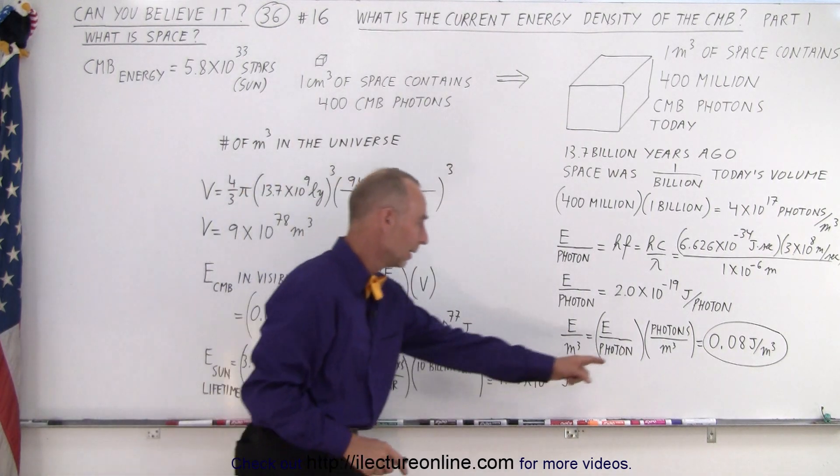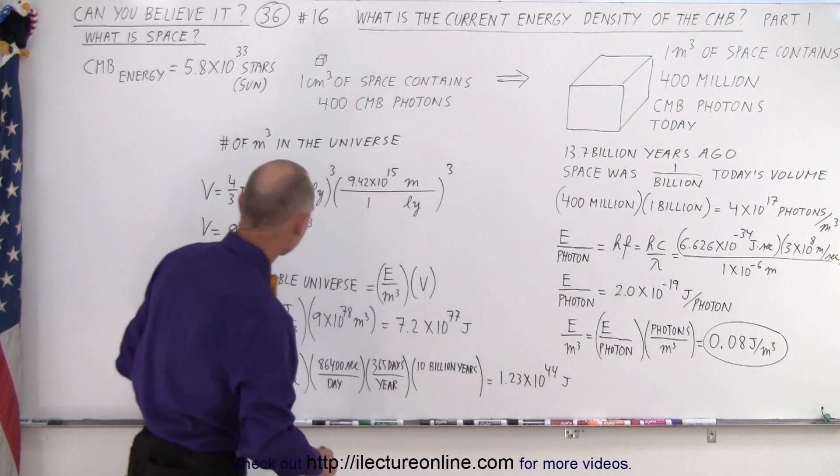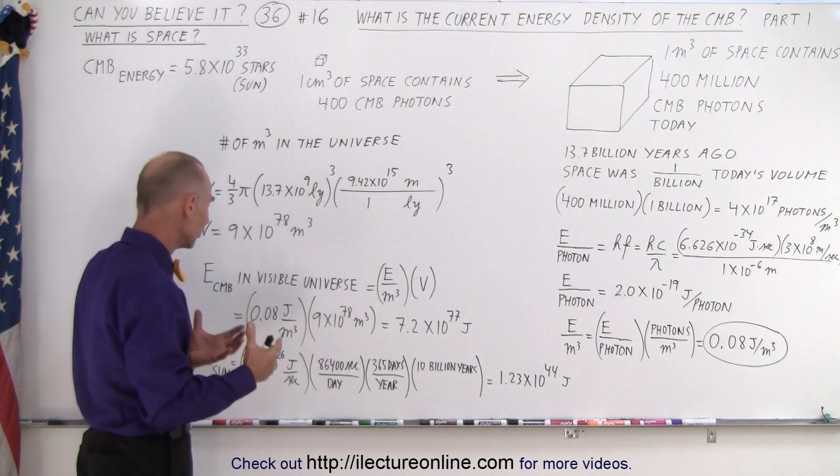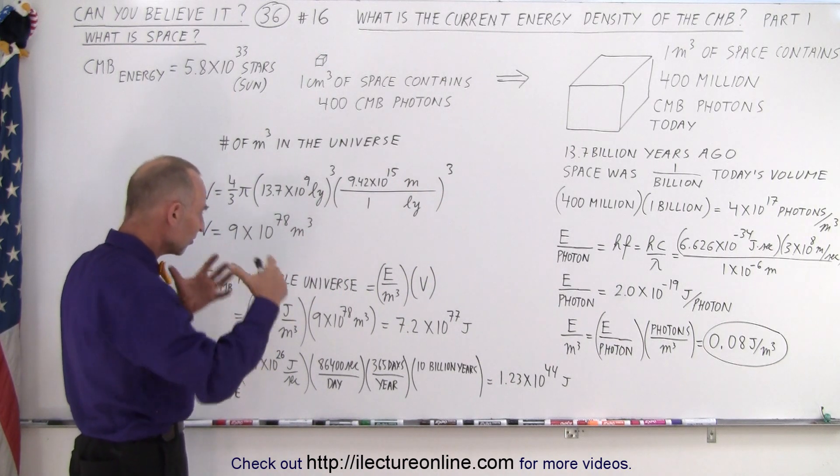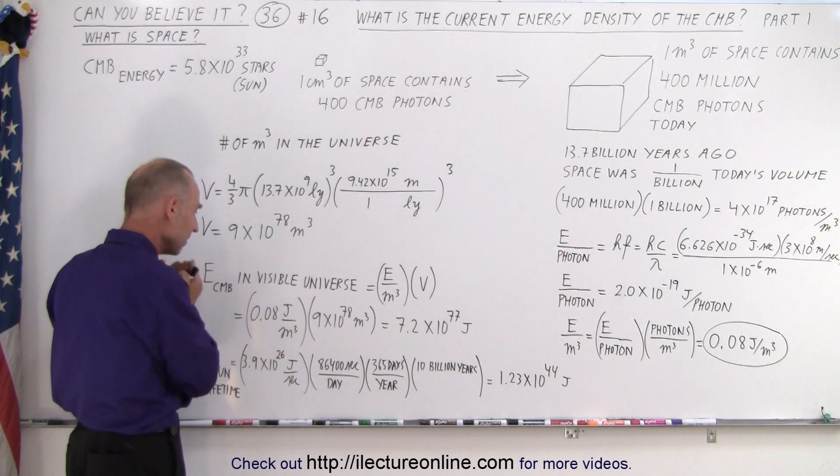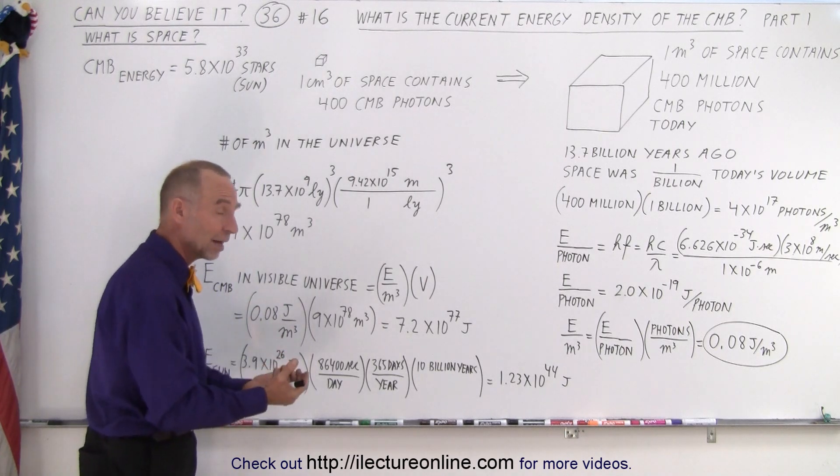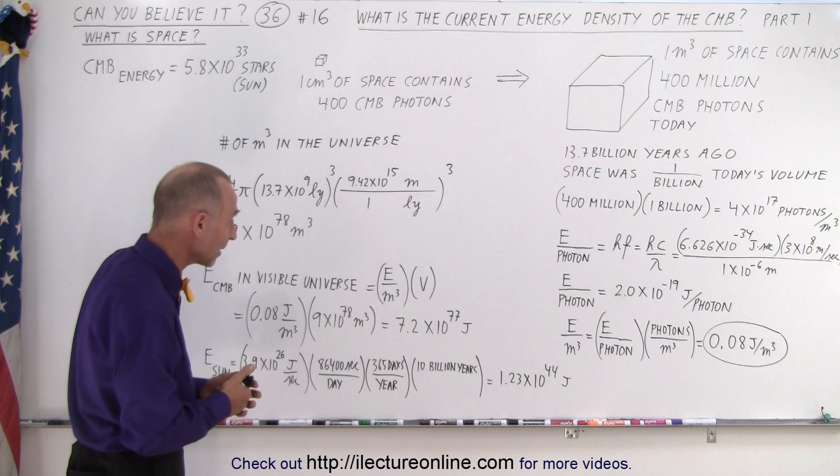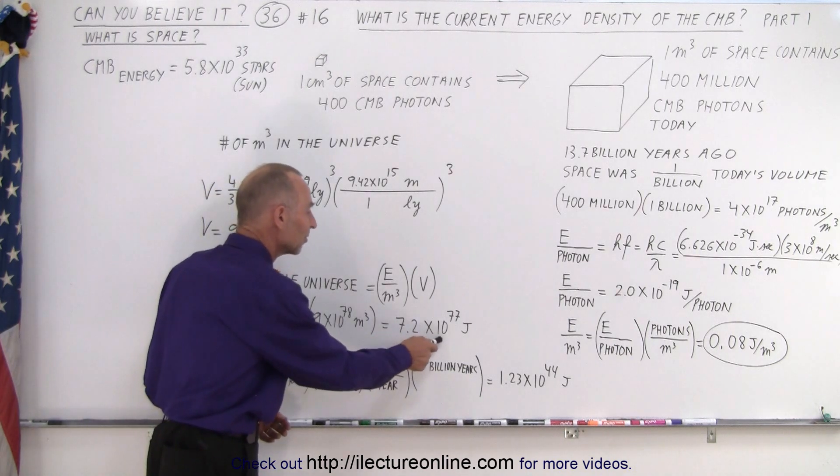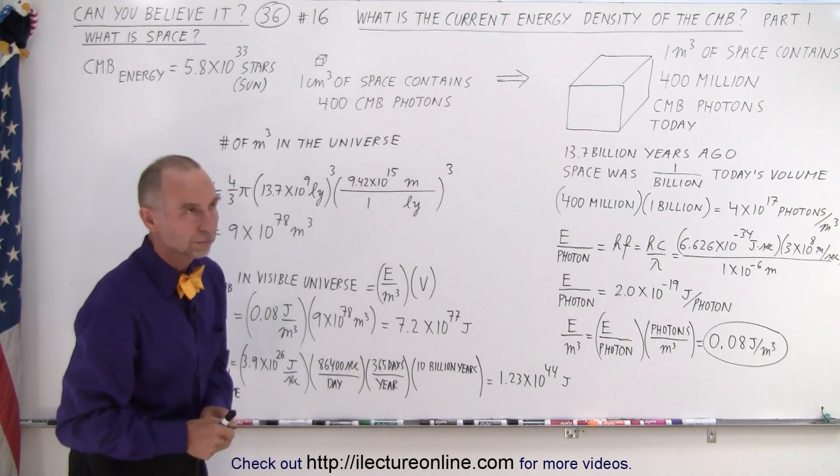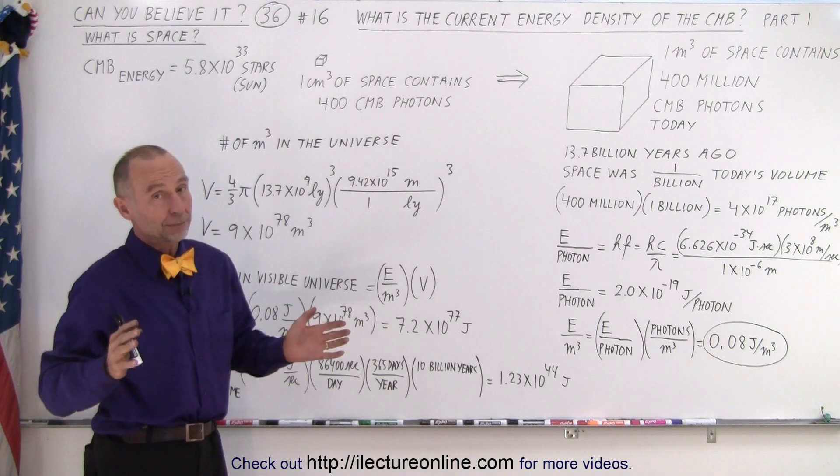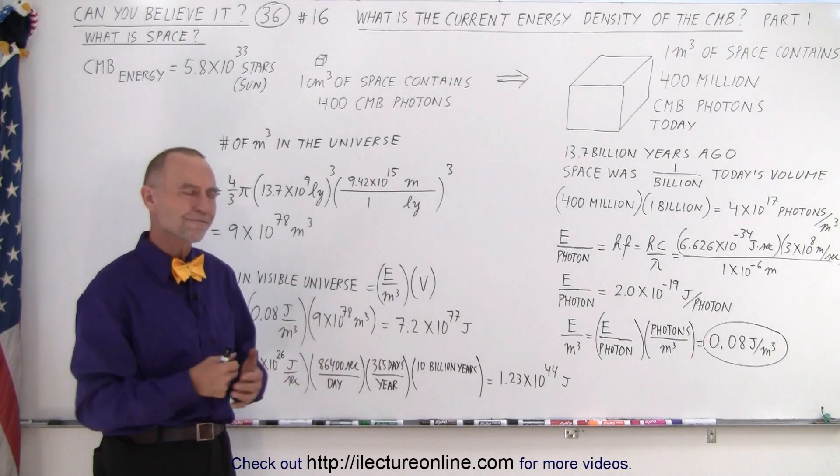So, we multiply the energy per cubic meter, times how many cubic meters there are in the universe. That means, in the visible universe, the energy of CMB radiation, back then, after decoupling, 380,000 years after the Big Bang, was 7.2 times 10 to the 77 joules. Seems like a big number, but what does that really mean?